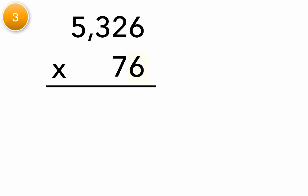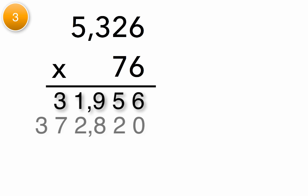Excellent! You've arrived at 31,956 as well. Now try multiplying the tens, starting with the 7. Awesome! You have 372,820. Add your numbers together.